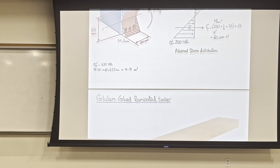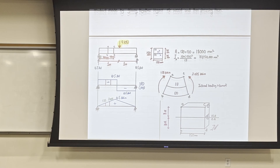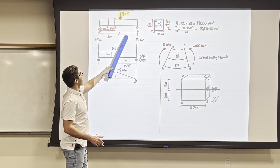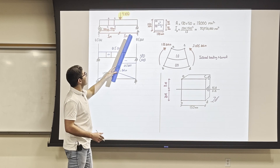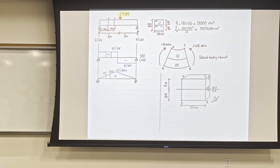Now let me explain this example. This is a glue-lam — a glued laminated timber made of layers of glued wood. I have a beam with a point load of 9 kN in the middle. The cross-section is made of two layers of glue-lam each with a height of 150 mm. I've been given the area and moment of inertia, and I have drawn the shear force diagram and bending moment diagram for this beam.